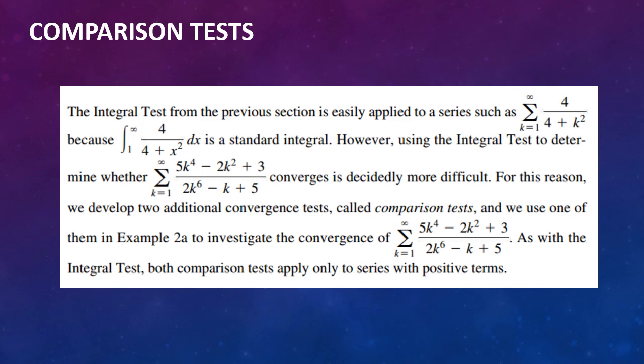However, using the integral test to determine whether the summation from k equals 1 to infinity of the quantity 5k to the fourth minus 2k squared plus 3, all divided by the quantity 2k to the sixth minus k plus 5, converges is decidedly more difficult. For this reason, we developed two additional convergence tests called Comparison Tests, and we use one of them in Example 2a to investigate the convergence of the problem just mentioned.